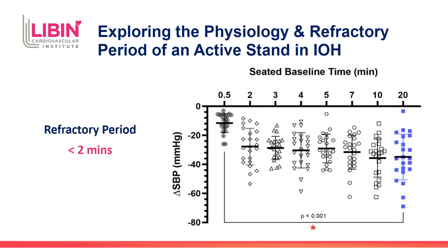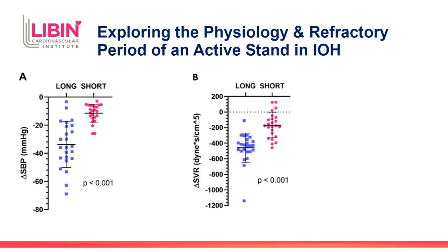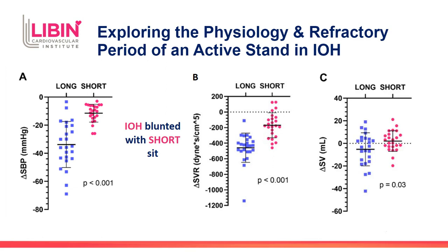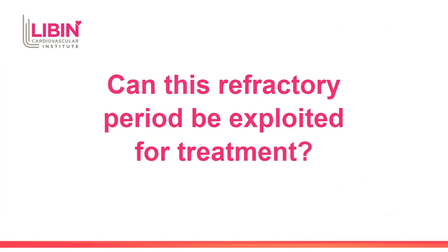Looking at the drop in systolic blood pressure following each sit-to-stand, the x-axis shows each individual seated duration — the short 30-second sit, then 2, 3, 4, 5, 7, 10-minute sits, and finally the long 20-minute sit — and the y-axis represents the change in systolic blood pressure immediately after each stand. Results indicate that a large drop in systolic blood pressure is not present following the 30-second sit, but returns following a 2-minute sit, suggesting the refractory period of the reflex underlying IOH lies between 30 seconds and 2 minutes. The IOH blood pressure response can be blunted with the short sit, primarily due to a rapid decrease in systemic vascular resistance and secondarily a decrease in stroke volume.